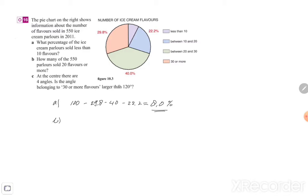How many of the 550 parlors sold 20 flavors or more? 20 or more means that's the green part and the orange part. So 40 percent plus 29.8 percent is equal to 69.8 percent.